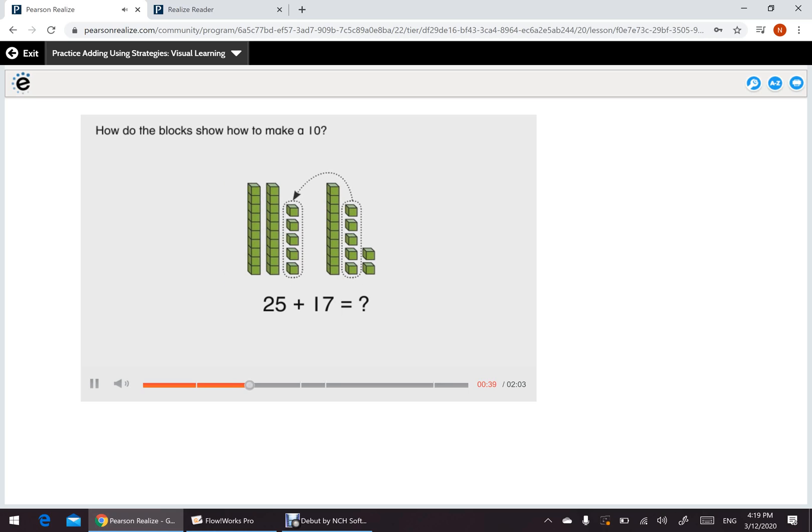How do the blocks show how to make a 10? You take 5 1's blocks from the 7 1's blocks in 17 and combine them with the 5 1's blocks in 25. So, when we take 5 1's from 25 and 5 from 7, as we learned, 5 and 5 will give us 1 10.